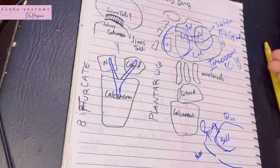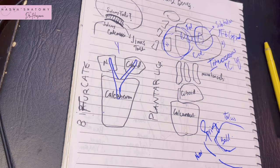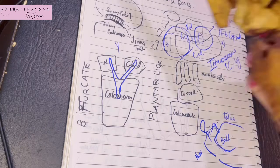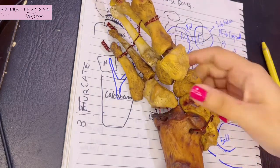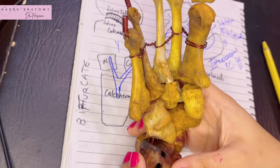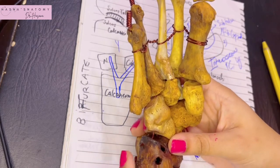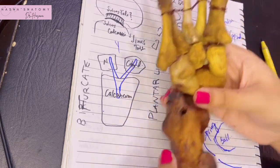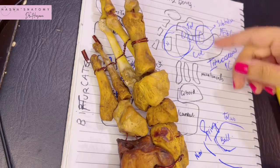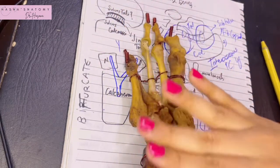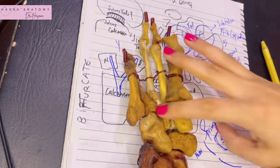Now let's move ahead and talk about the calcaneo-cuboid joint. The calcaneo-cuboid joint is a saddle variety of joint. It has multiple ligaments: a fibrous capsule, the lateral limb of the bifurcate ligament, and then the long plantar and short plantar ligaments, which are attached on the plantar surface of the two bones.